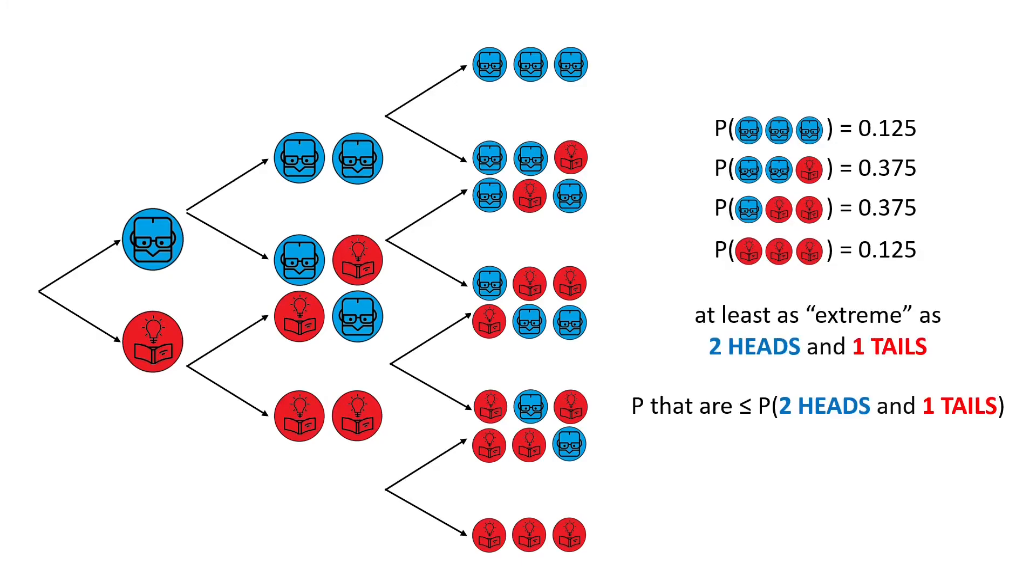And now to compute the p-value, we have to sum up all the probabilities that are at least as extreme as two heads and one tails, or equivalently the probabilities of the cases that are lesser or equal to the probability of two heads and one tails, which for this case is composed of all the possible outcomes since two tails and one heads is as extreme as two heads and one tails, and three tails or three heads are even more extreme. So consequently, our p-value would be also equal to 1.